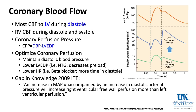A 2009 gap in knowledge: an increase in mean arterial pressure unaccompanied by an increase in diastolic arterial pressure will increase right ventricular free wall perfusion more than left ventricular perfusion. If MAP rises entirely from a rise in systolic blood pressure without any increase in diastolic pressure, the right coronary artery — which receives flow during both systole and diastole — benefits more, while the left ventricle which depends on diastolic flow does not.